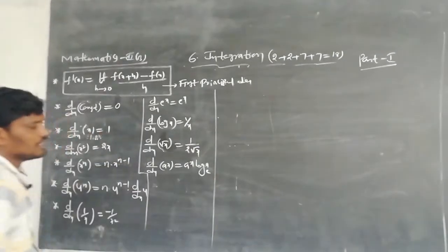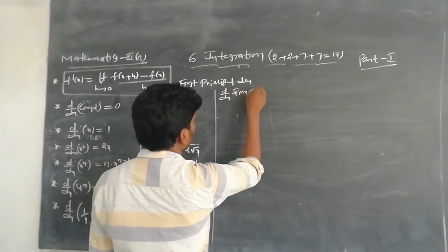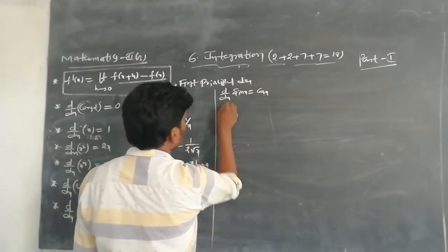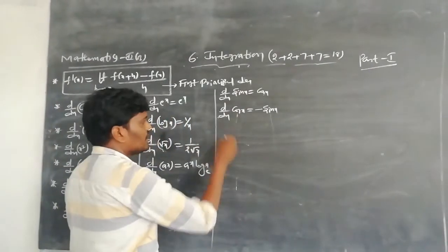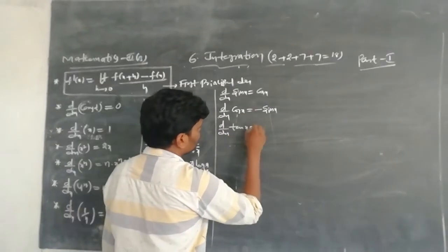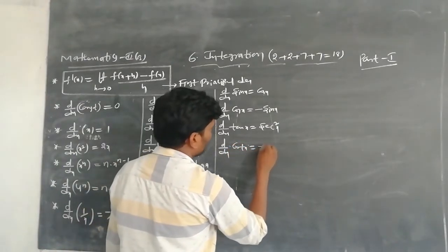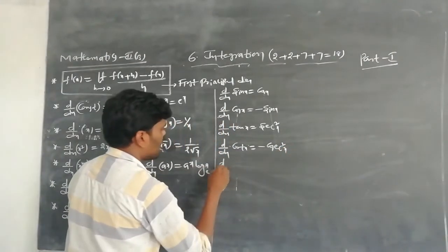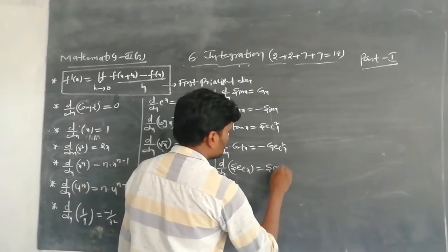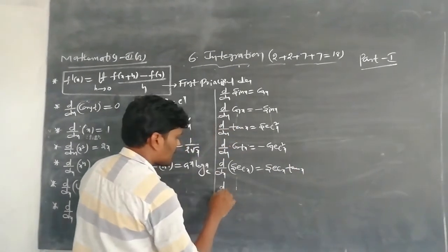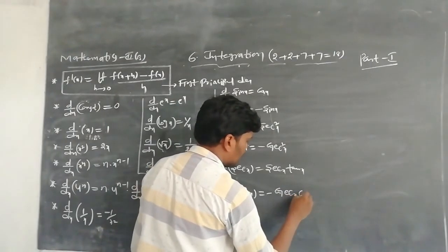Next, trigonometry derivatives. d/dx of sin x = cos x. d/dx of cos x = −sin x. Derivative of tan x = sec²x. Derivative of cot x = −cosec²x. Derivative of sec x = sec x · tan x. Derivative of cosec x = −cosec x · cot x.